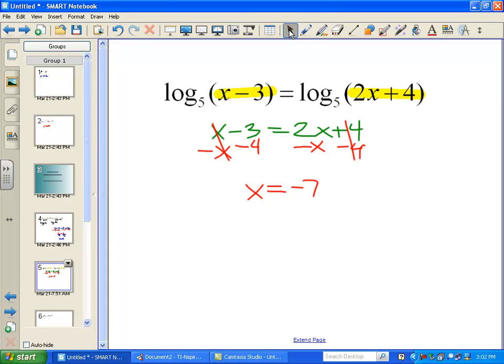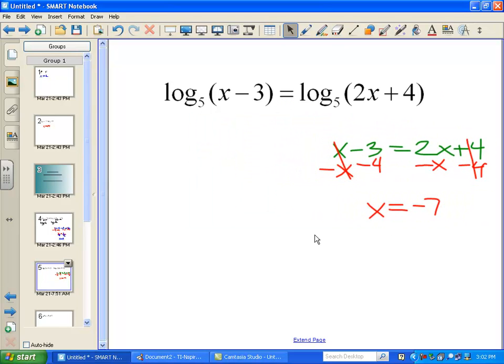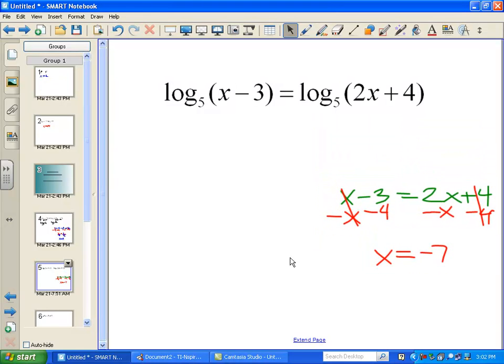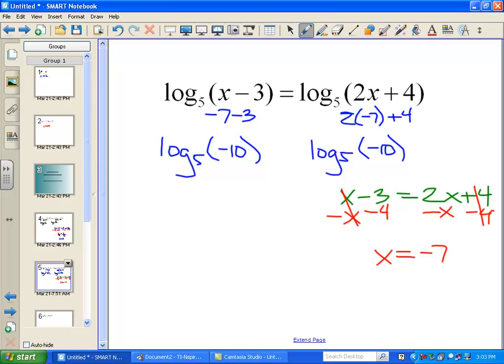So, that looks pretty good. And, of course, we need to check our work. What we're going to do is just say that negative 7 take away 3 should match 2 times negative 7 plus 4. So, this becomes log base 5 of negative 10. And 2 times negative 7 is negative 14. Negative 14 plus 4 is also negative 10. So, it looks like the answer is negative 7.